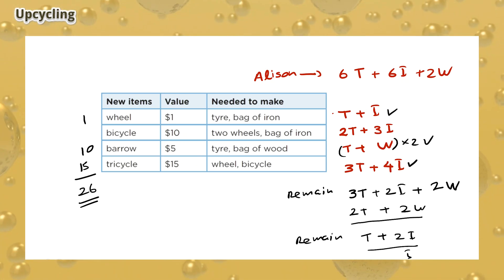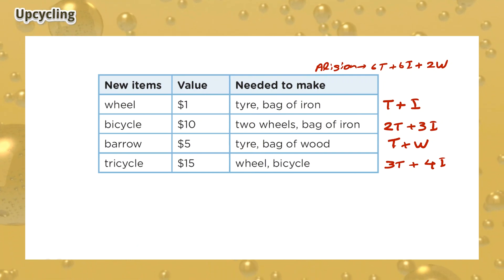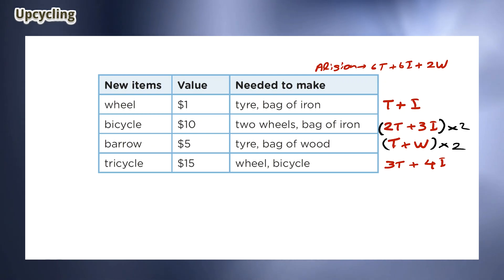However, what if Alison does not choose to build a tricycle and make use of this one iron bag remaining? If she chooses to make two bicycles, this will cost her four tires and six bags of iron. Then, she can make two barrels, which will cost her two tires and two bags of wood. After this, Alison will have no remaining materials. She can sell the bicycles for $20 and she can sell the barrels for $10. All together, she makes a profit of $30.